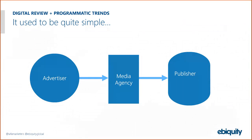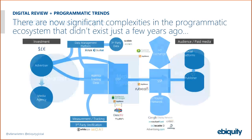As we start to review the industry, when we go back in time it used to be very simple. As an advertiser, you'd hand money to an agency who was acting as an agent, buying media on your behalf in your best interest, and that ultimately ended up in the hands of a publisher. But with the rise of digital and more specifically programmatic, as you can see on this complicated slide, it has increased in complexity significantly, really just over the last few years.